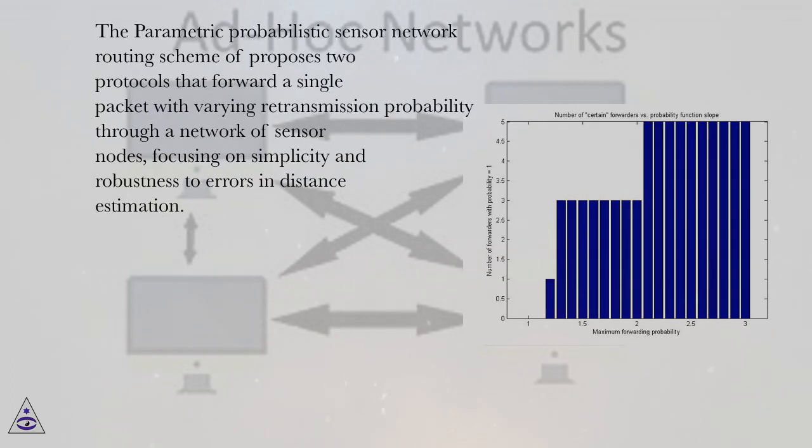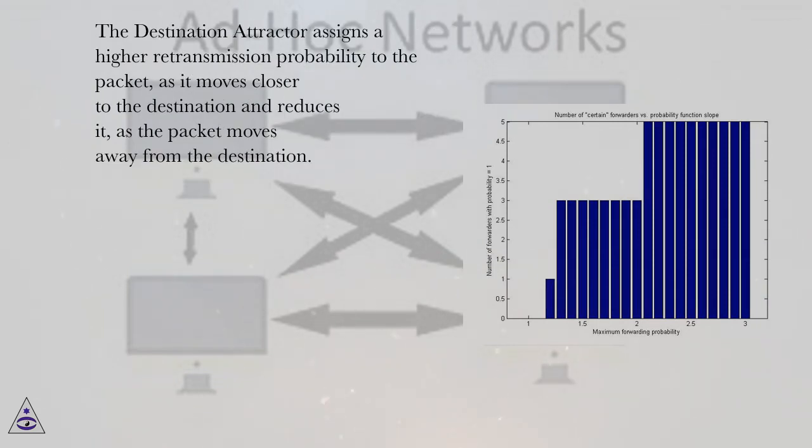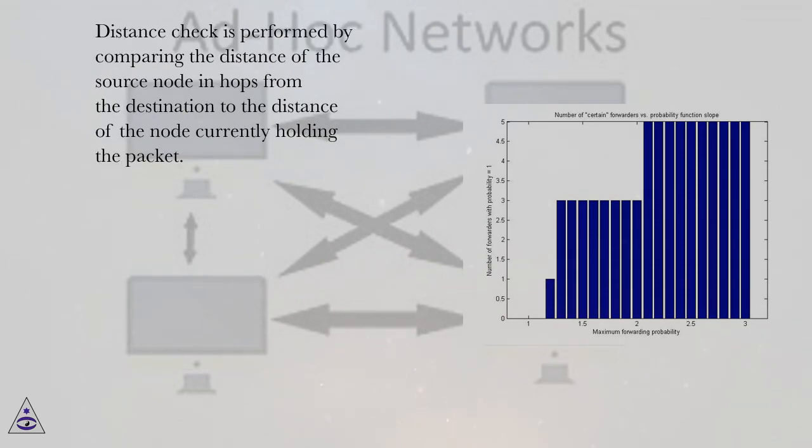The Parametric Probabilistic Sensor Network Routing Scheme proposes two protocols that forward a single packet with varying retransmission probability through a network of sensor nodes, focusing on simplicity and robustness to errors in distance estimation. The destination attractor assigns a higher retransmission probability to the packet as it moves closer to the destination and reduces it as the packet moves away from the destination. Distance check is performed by comparing the distance of the source node and hops from the destination to the distance of the node currently holding the packet.